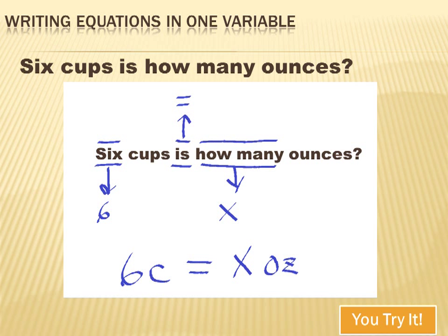Let's translate this sentence: six cups is how many ounces? We translate the six from a word to the number 6. We're not going to really translate cups — it stays the same, though we may use an abbreviation. 'Is' means equals. 'How many' is the question — that's what we're trying to answer, so we translate that into x, the variable we're going to solve for. Ounces becomes the abbreviation OZ. So we translate it into: six cups equals x ounces.